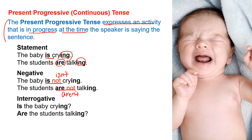Interrogative: Is the baby crying? Are the students talking? Let's read the sentences one more time. The baby is crying. The baby is not crying. Is the baby crying? The students aren't talking. Are the students talking?